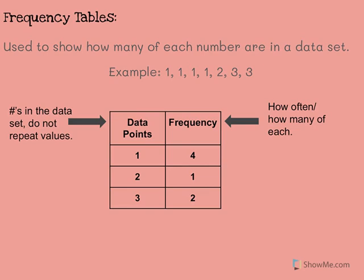So on this left side of our data over here, our data points, that is the numbers in the actual data set, and we're not going to repeat those values. So I have 1, 2, and 3. Those are the only numbers that are in my data. And now we're just going to see how often they actually occur, so how many there are of each of them.